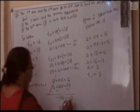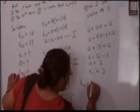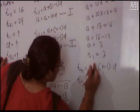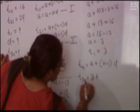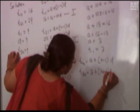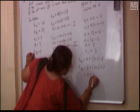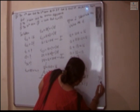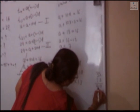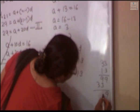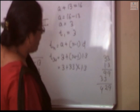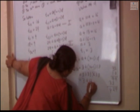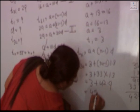Now we calculate T34. Using formula TN equal to A plus N minus 1 into D: T34 equal to 3 plus 34 minus 1 into 1.3. That is 3 plus 33 into 1.3. 33 multiplied by 1.3 gives 42.9. So T34 equal to 3 plus 42.9, which gives T34 equal to 45.9.